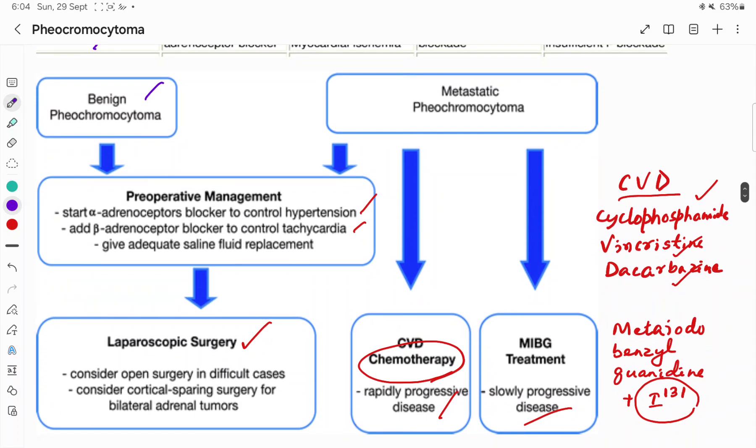If it has become malignant or metastatic, and if it is rapidly progressive, then we can use CVD chemotherapy. CVD stands for C for cyclophosphamide, V for vincristine, D for dacarbazine. These three cytotoxic agents we can use.